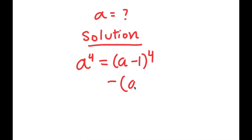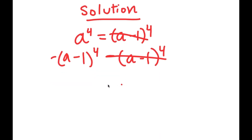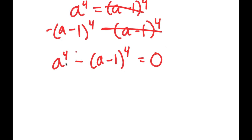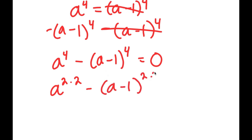From here, I'm going to subtract a minus 1 to the power of 4 on both sides. These two cancel out and I get a to the power of 4 minus a minus 1 to the power of 4 is equal to 0. Now I'm going to rewrite a to the power of 4 as a to the power of 2 times 2, and a minus 1 to the power of 4 as a minus 1 to the power of 2 times 2.